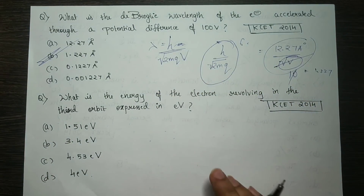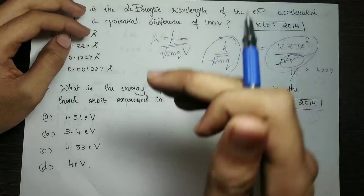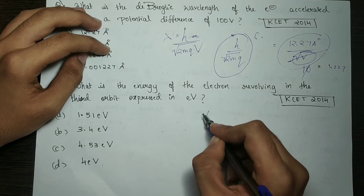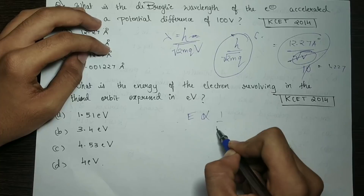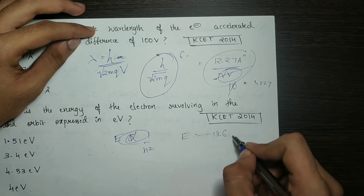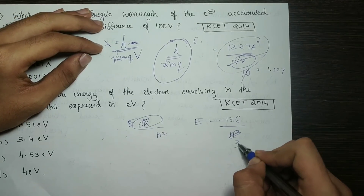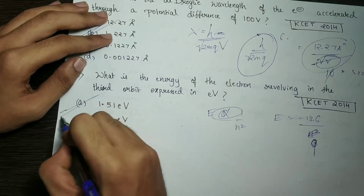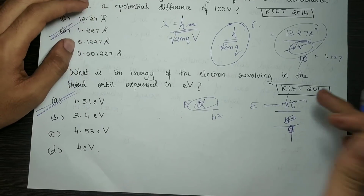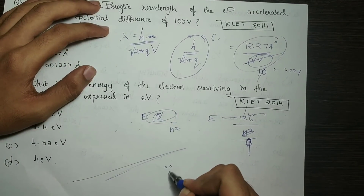What is the energy of the electron revolving in the third orbit expressed in electron volts? The energy depends on the inverse square of the orbit number. E is inversely proportional to n squared. E equals minus 13.6 times Z squared divided by n squared. For hydrogen, Z equals 1, and n equals 3, so E equals minus 13.6 divided by 9. That is option A.